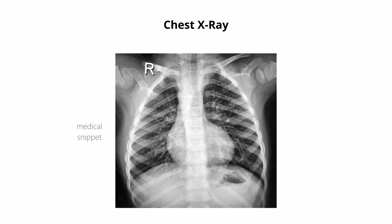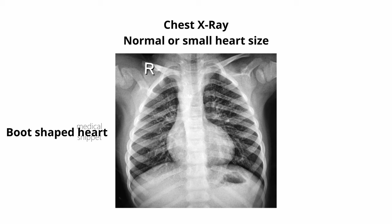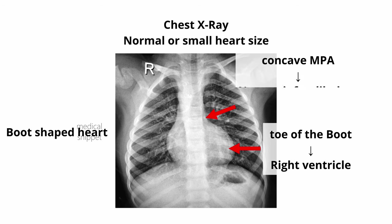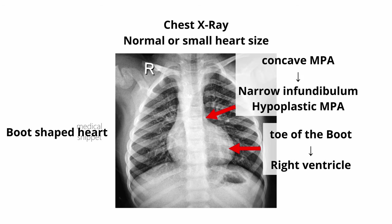Chest X-ray shows normal or smaller than normal heart size. The heart shadow is called a boot-shaped heart. The toe of the boot is formed by the upward-pointing cardiac apex, which is formed by the hypertrophied right ventricle. The narrow part of the boot is due to the concave main pulmonary artery segment, caused by the narrow infundibulum or hypoplastic main pulmonary artery.